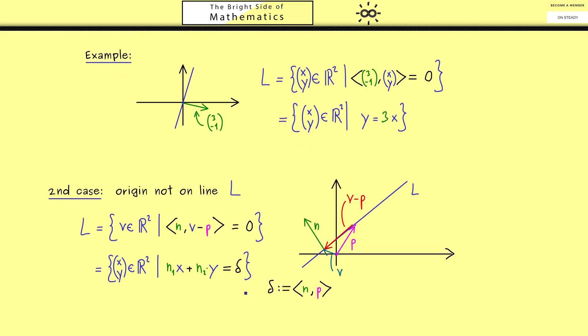And now this constant delta is just the inner product n with p. We say it's a constant because it does not depend on the numbers x and y. It's just a number that comes from the line L. So in summary you should see with only three numbers n1, n2, and delta we can describe a whole line L in the plane.